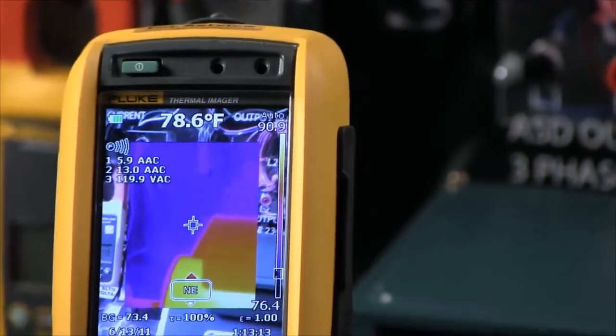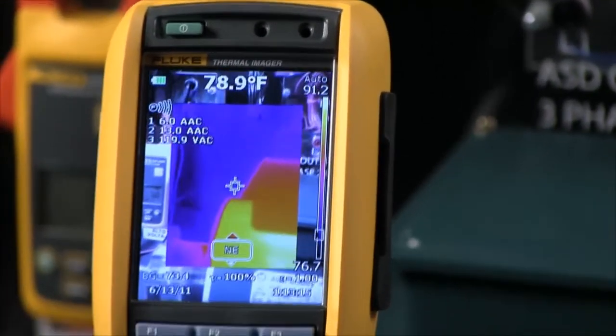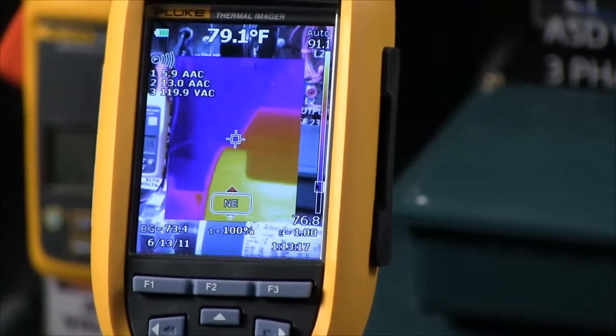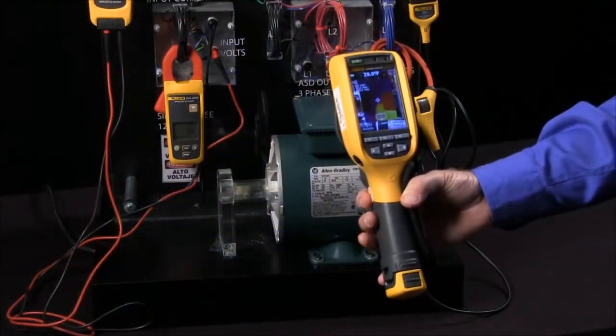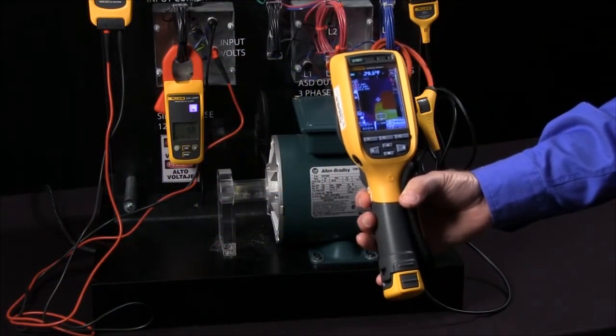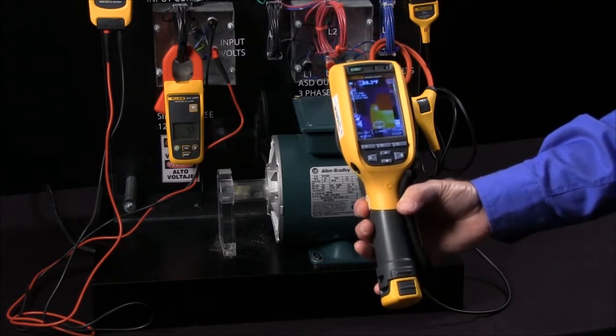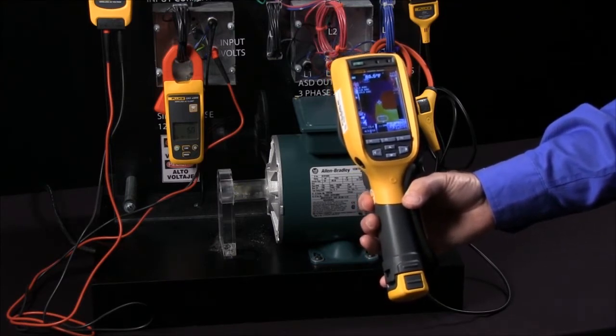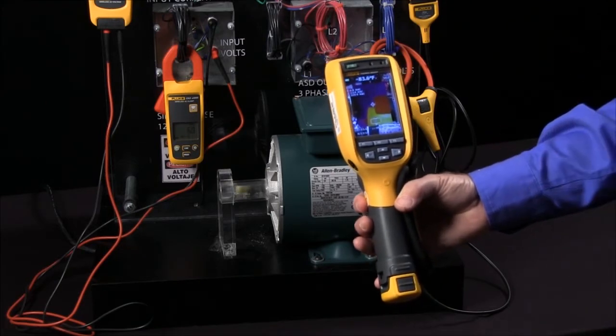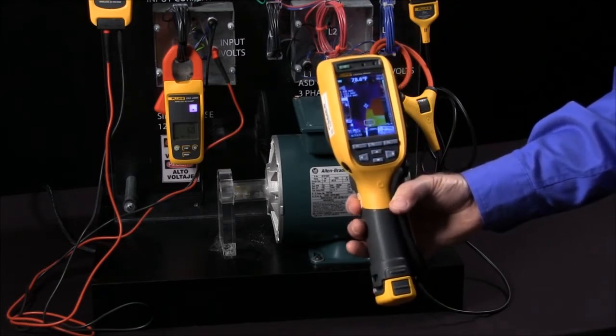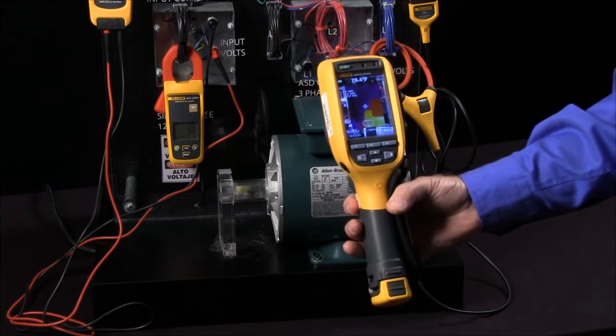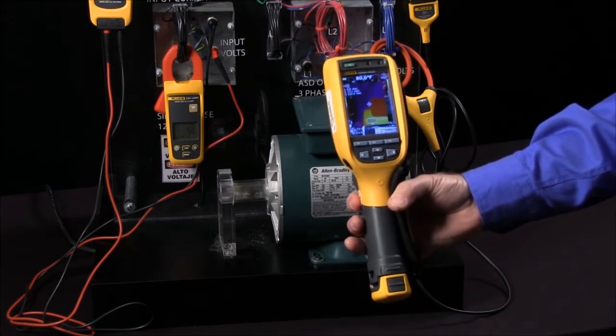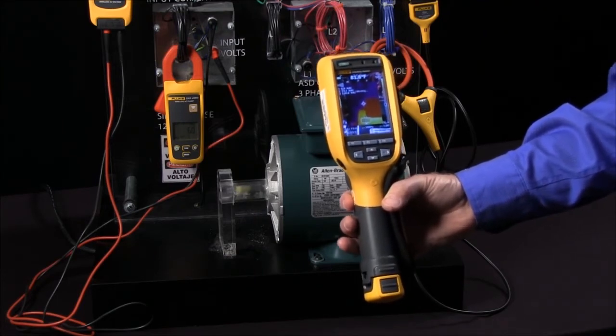So very quickly and simply with one shot we can take both a thermal image and get all the measurements and have everything we need for a report, without having to first take the thermal image then go get our current clamps then write them down. This records everything right there with one shot with the Fluke thermal imaging talking wirelessly to up to five CNX remote measurement modules.